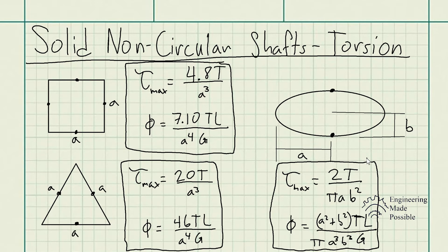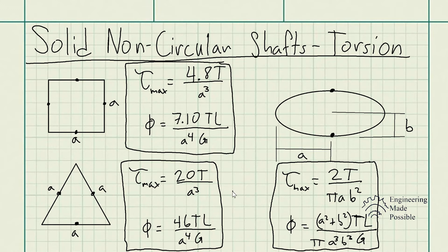One thing to keep in mind is that for the same cross-sectional area, if you're comparing these geometries with a circular shaft, a circular shaft is more efficient in terms of the maximum shear stress that it would experience. For the same area, the circular shaft would be a lot more efficient in terms of design — it would experience less maximum shear stress and also a smaller angle of twist compared to these other geometries.